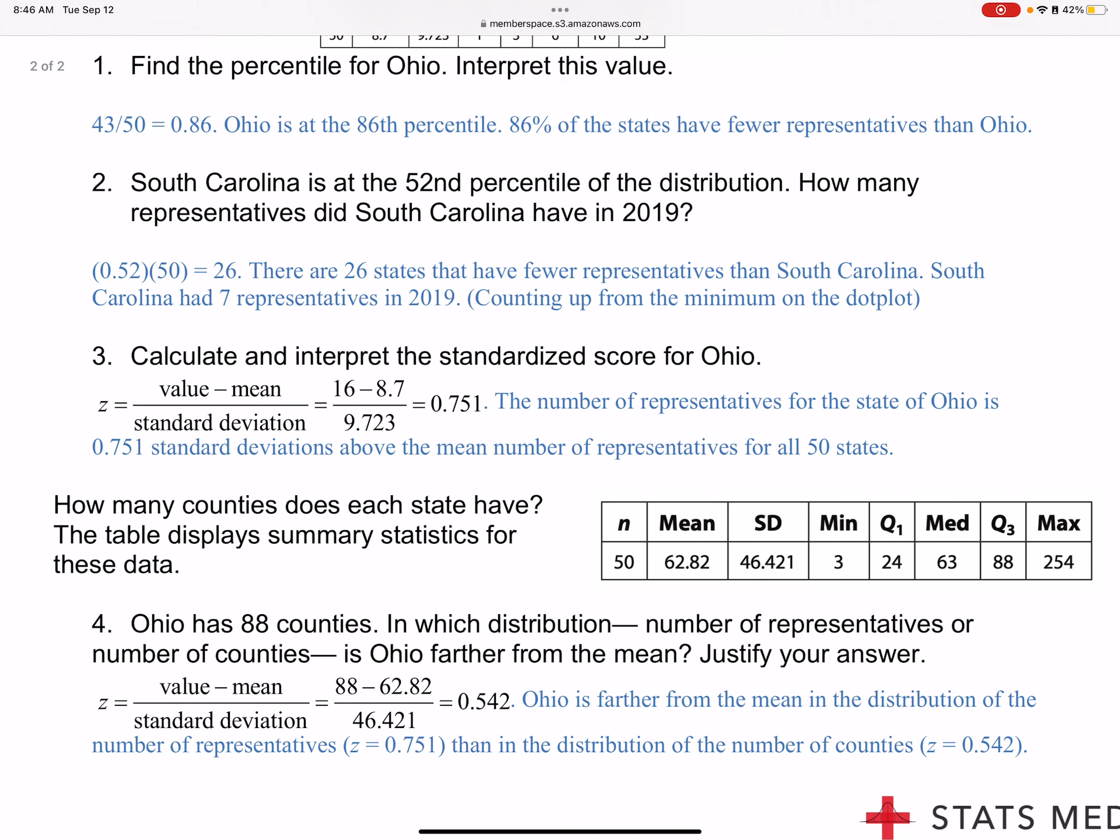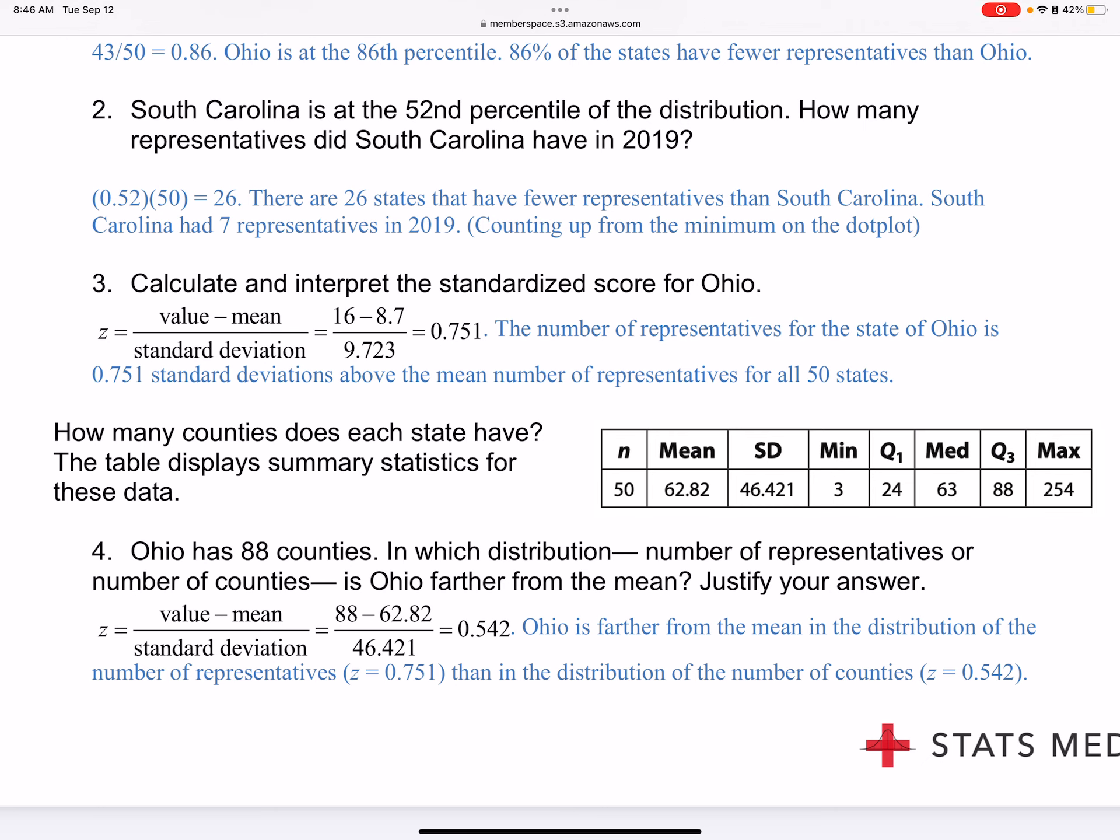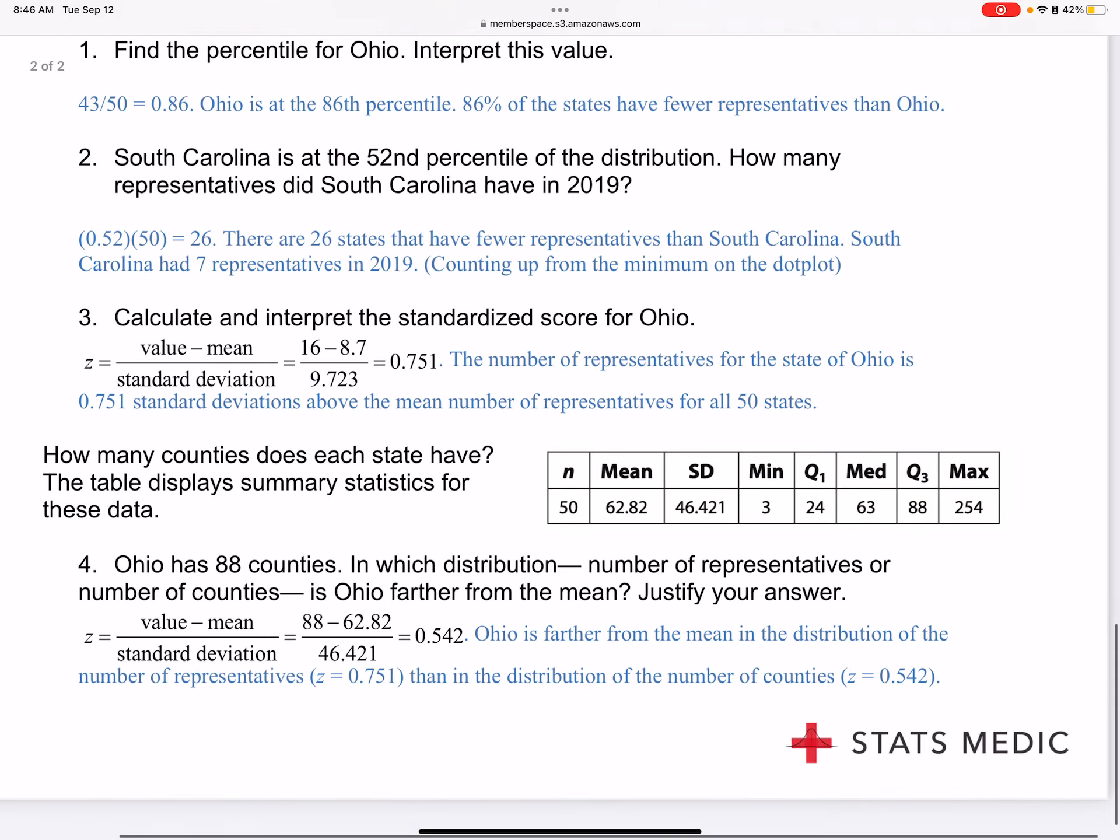How many counties does each state have? We see Ohio has 88 counties. In which distribution is Ohio further away from the mean? 88 counties minus the mean of 62.82 divided by the standard deviation gives 0.542. Ohio is further from the mean in the number of representatives with a z-score of 0.751 than the distribution in the number of counties of 0.542. Since 0.751 is higher or further away than 0.542, that means it's further from the mean.